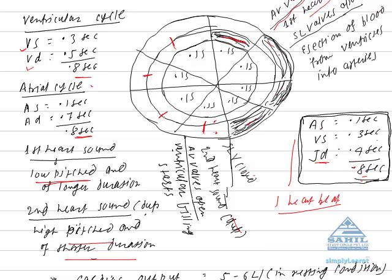The diastolic phase of both atria and ventricle continues for 0.4 seconds: 1, 2, 3, and 4. This is called joint diastole. As soon as joint diastole is completed, the atria contracts.